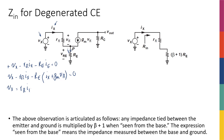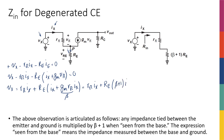So vx equals r_pi·ix plus re times (ix + gm·v_pi). Using Ohm's law, v_pi equals r_pi·ix, so gm·r_pi can be replaced with beta. This gives vx = r_pi·ix + re·(beta + 1)·ix. Therefore vx over ix equals r_pi plus (beta + 1) times re.